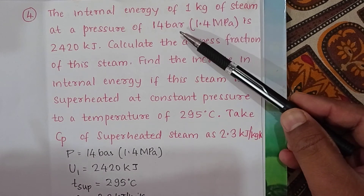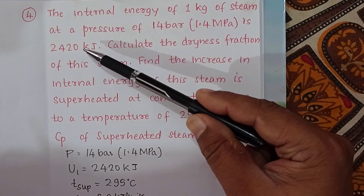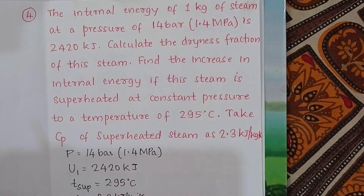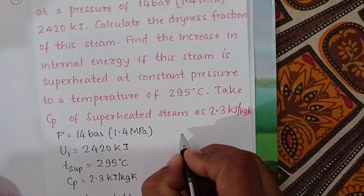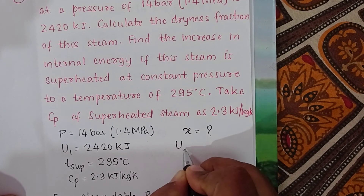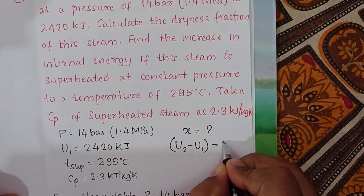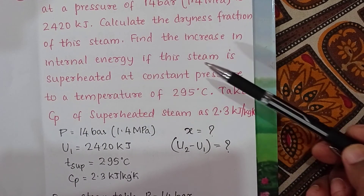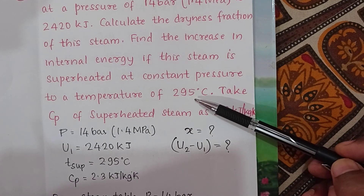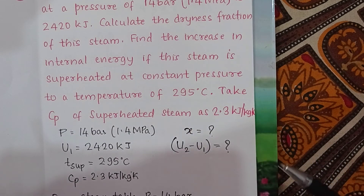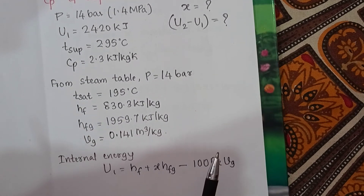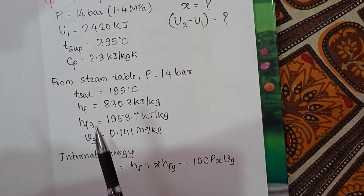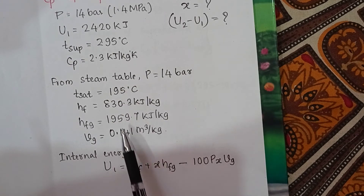Let me repeat the problem once more. We have 1 kg of steam at 14 bar with internal energy U1 = 2420 kJ. We need to find the dryness fraction X and the increase in internal energy ΔU = U2 − U1. Other given values are: T_sup = 295°C and Cp = 2.3 kJ/kg·K. From the steam table at 14 bar, we obtain T_sat, Hf, Hfg, and Vg.